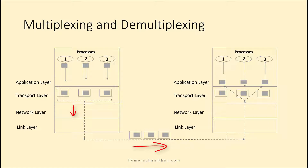The destination host delivers incoming transport layer segments to the correct socket. This operation is called demultiplexing.